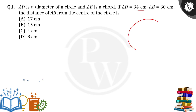There is a circle which is having a chord. What is the chord? AB is the chord. It is first given that the measure of AB is equal to 30 cm.